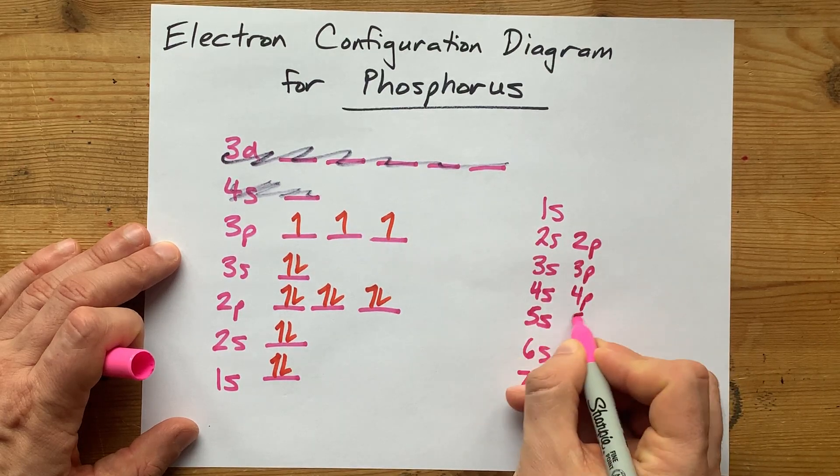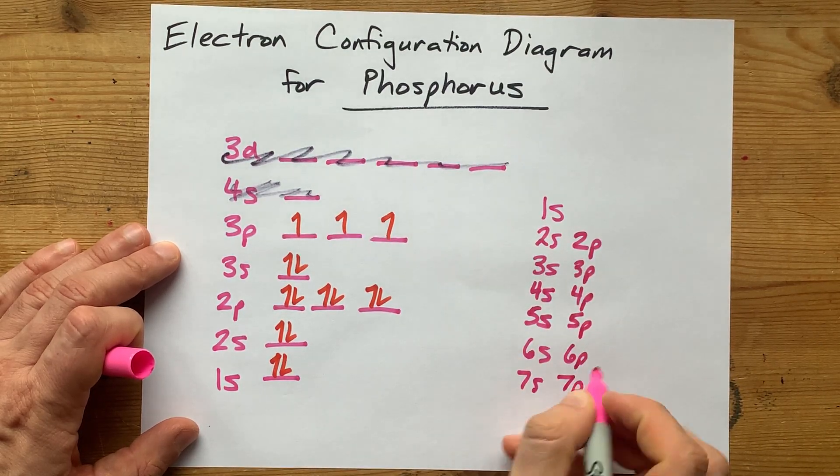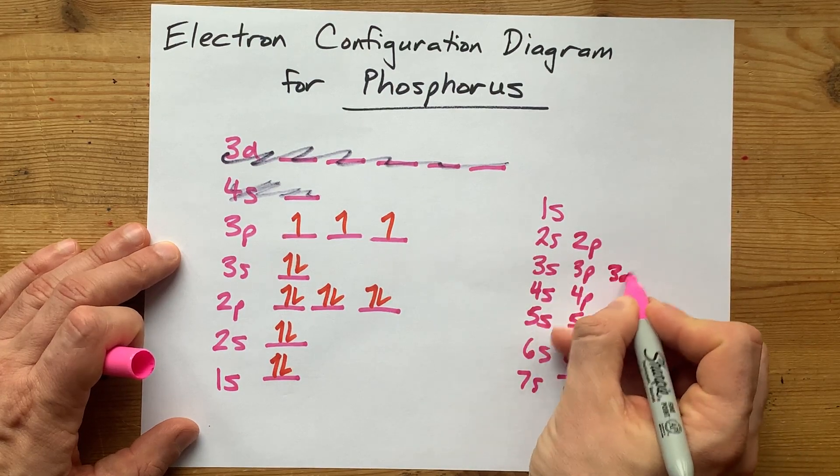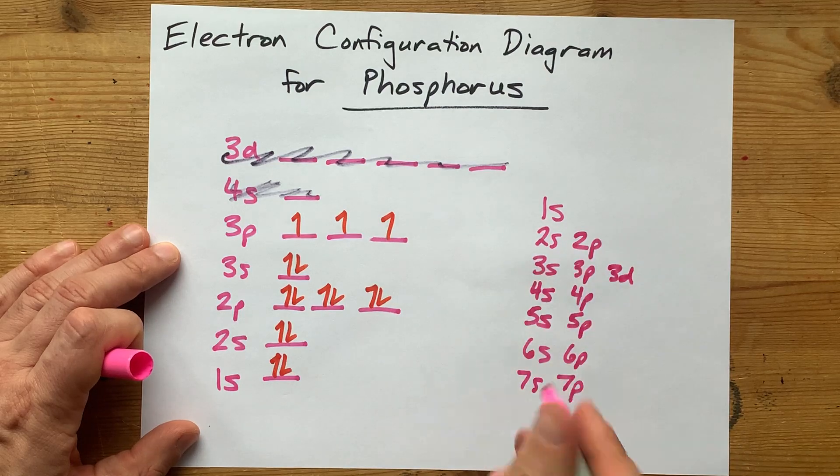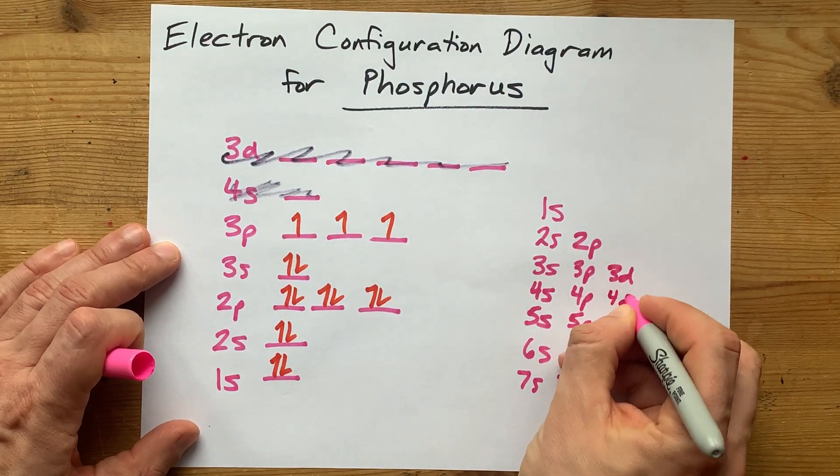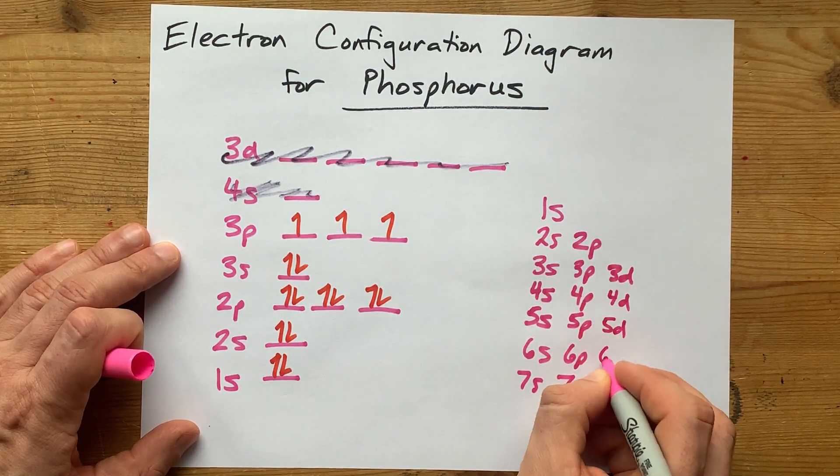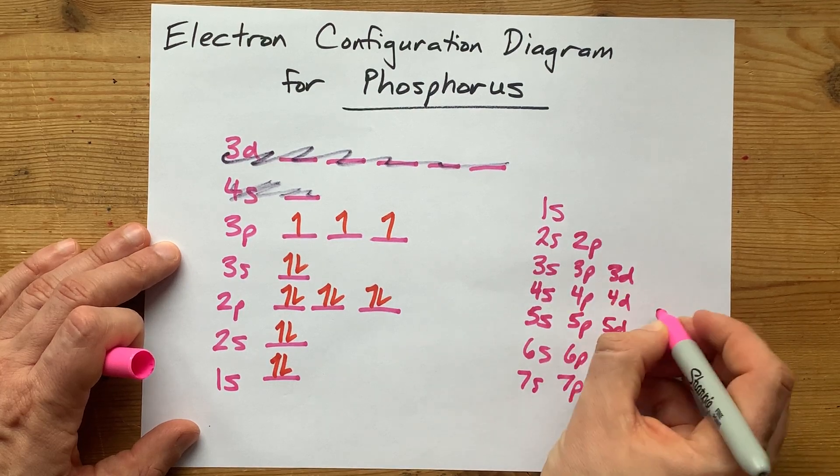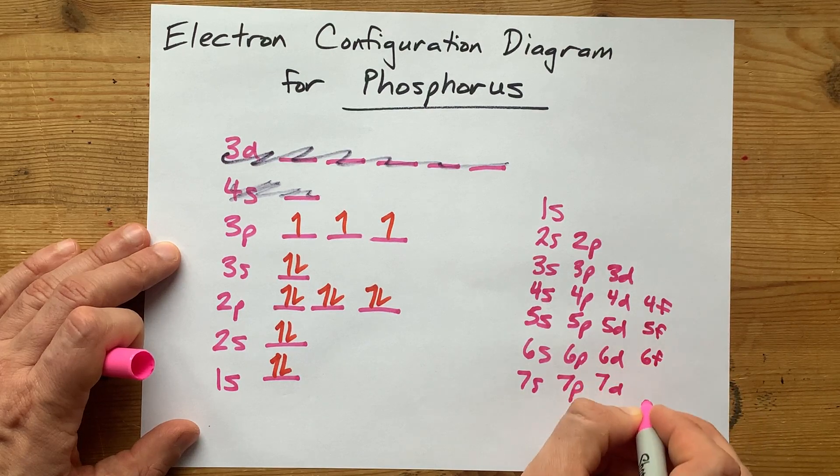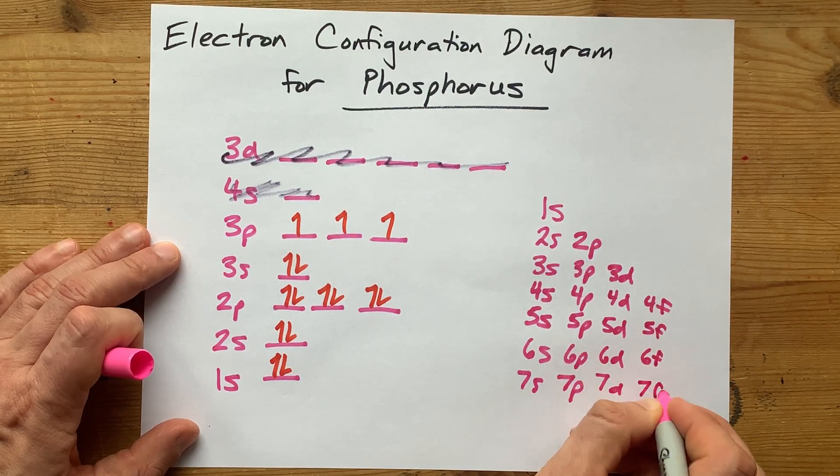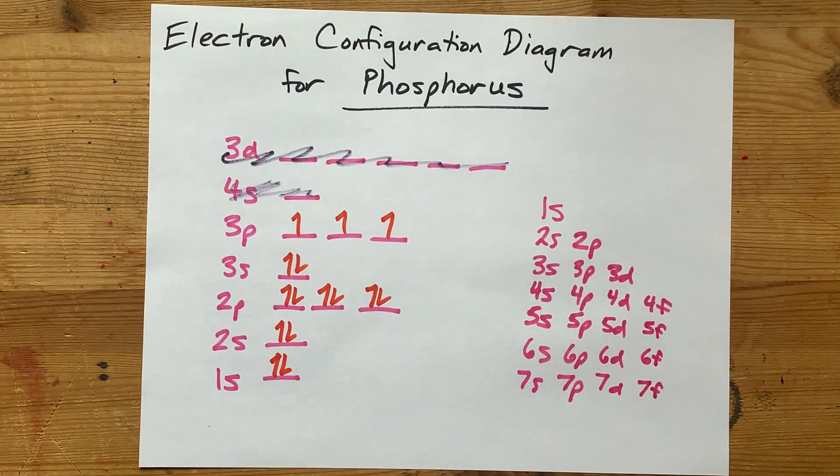3p, 4p, 5p, 6p, 7p, etc. Next to that, do the D's, but the D's start at 3. See how we're getting this nice diagonal forming here? Then you've got your 4d, your 5d, your 6d, etc. And then your F's start at 4. 5f, 6f. I've never seen a 6f in my entire life. But hey, that's how it's going to be.